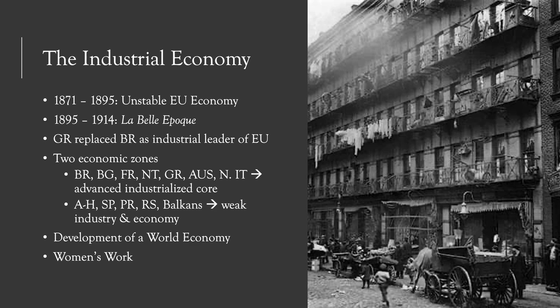Germany also replaced Britain as the industrial leader of Europe in the second half of the century. Britain's early lead made it more difficult to modernize their factories and techniques, and British entrepreneurs were suspicious of new technologies and reluctant to invest. The British also did not invest as much in scientific and technical education as Germany did. The new fields of the second Industrial Revolution required more training and scientific knowledge, and Germany supported that relationship between science and technology by investing significantly in education and training for new scientists.